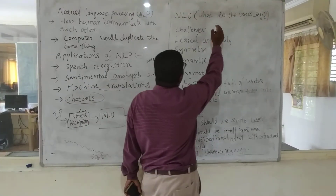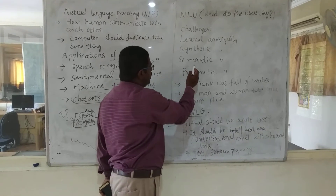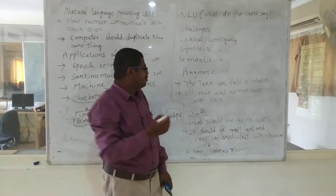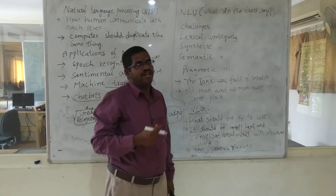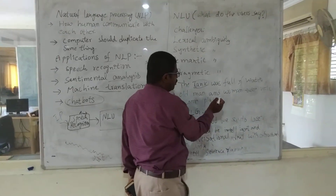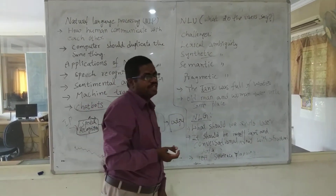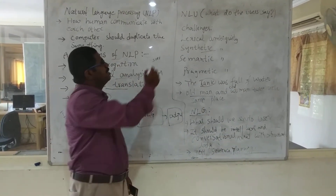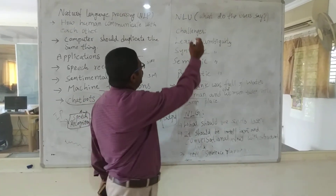Now we come to NLU — natural language understanding. What does the user say? There are challenges in NLU: lexical ambiguity, syntactic ambiguity, semantic ambiguity, and pragmatic ambiguity. For lexical ambiguity, for example, the sentence 'tank was full of water' — tank means water tank, or it could mean an army tank; multiple meanings exist and the computer must understand. For syntactic ambiguity, consider 'old man and woman' — the computer can't understand what is meant. There are many such challenges in NLU regarding what the user wants and how they want to communicate in real time.